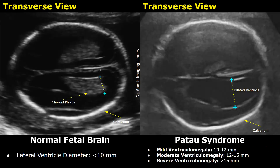In mild ventriculomegaly, the diameter of the lateral ventricle is between 10 and 12 mm. When the diameter is more than 12 and less than 15 mm, it is considered moderate ventriculomegaly. And when the diameter exceeds 15 mm, it is considered severe ventriculomegaly.